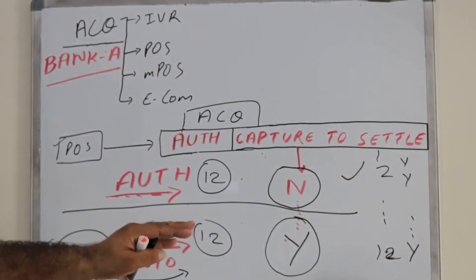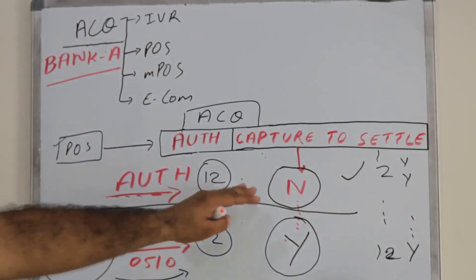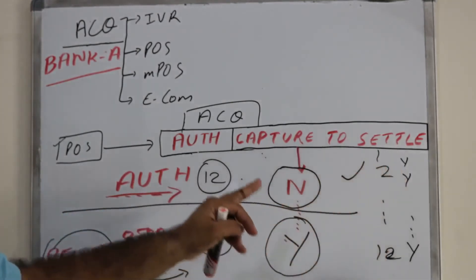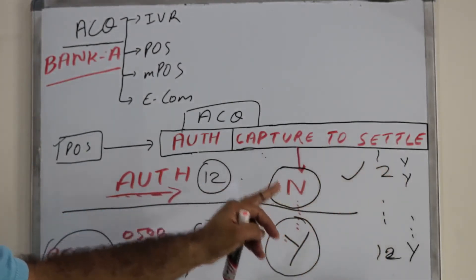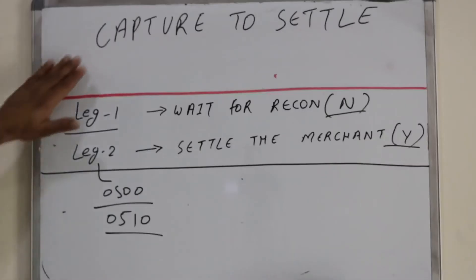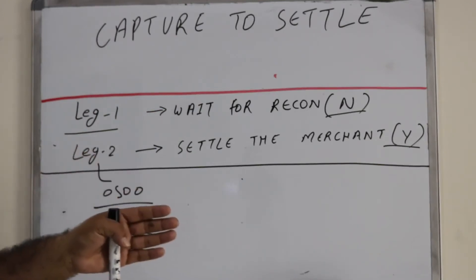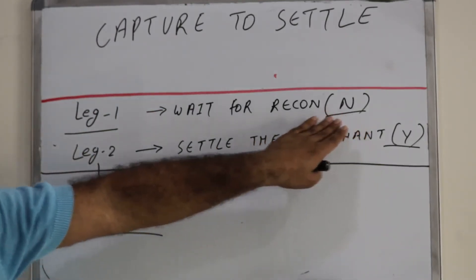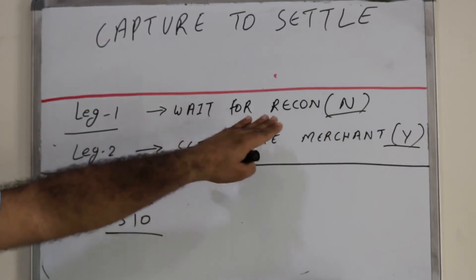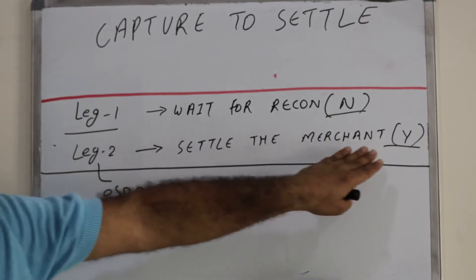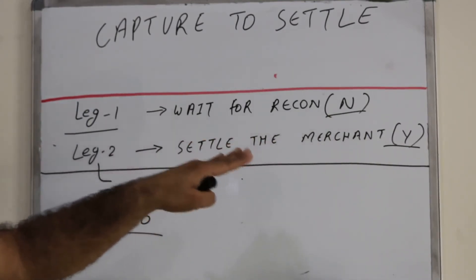Whatever transactions were performed throughout the day have been marked with flag Y, meaning those transactions are ready to settle the merchant. From the capture-to-settle flag, there are two lags: authorization and reconciliation. In lag 1 at the time of authorization, the flag value indicates we have to wait for reconciliation. However, once the 500 message is processed, it indicates the transaction can be used to settle the merchant.